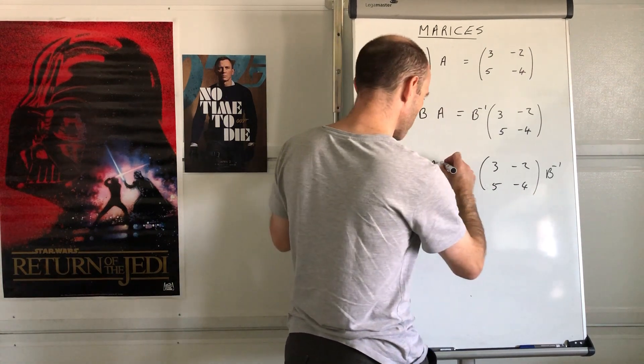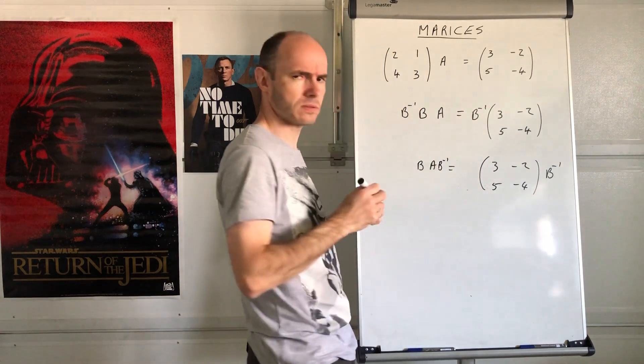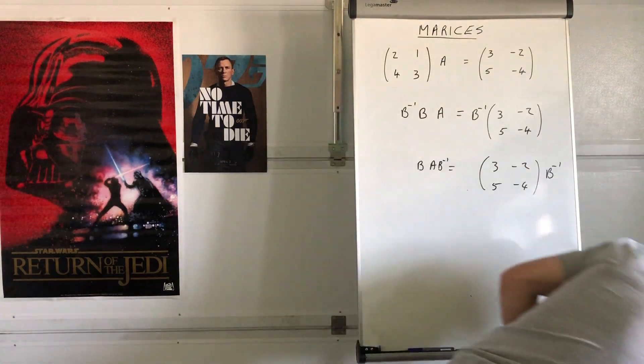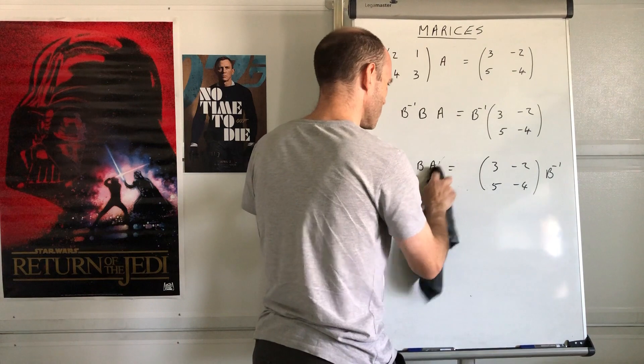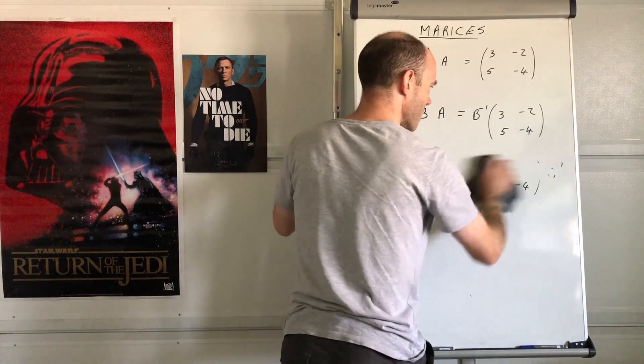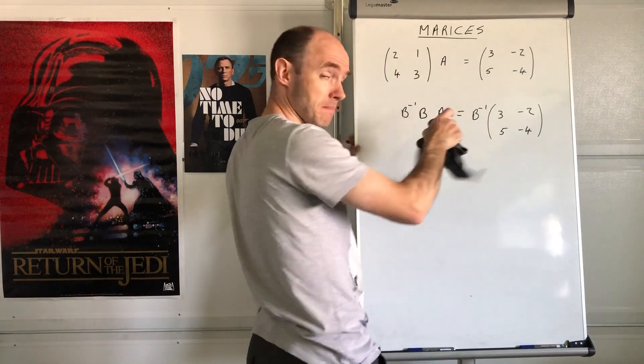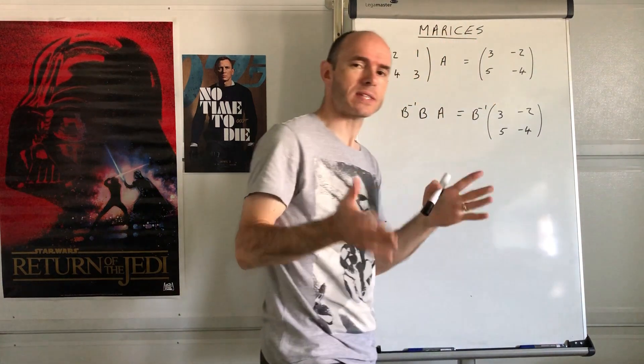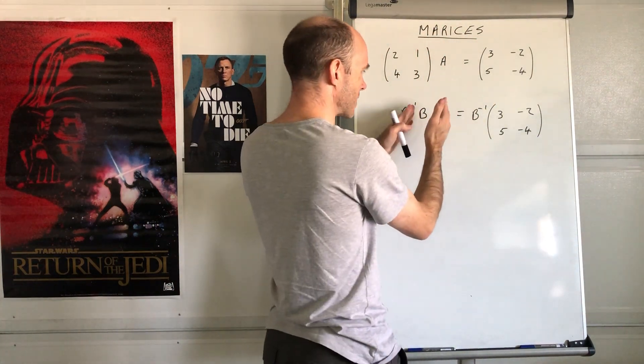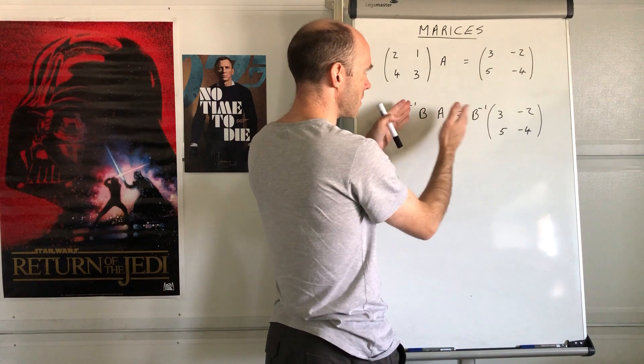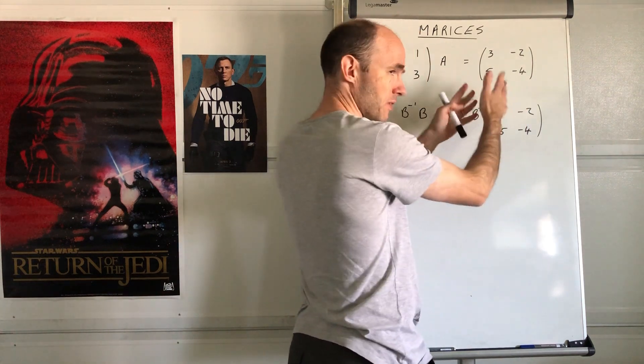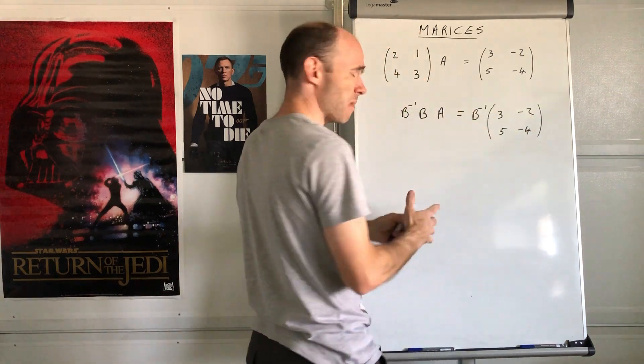If I'm gonna multiply on the left, as we say, by inverse B, I've got to multiply this on the left as well. Remember the order matters. I can't just put them wherever I want. If I put the inverse of B there, that's not much good.